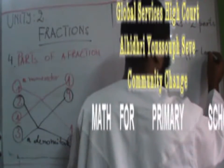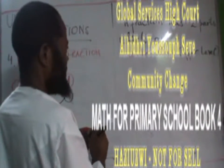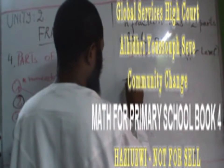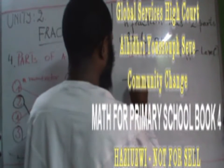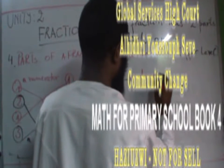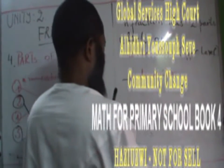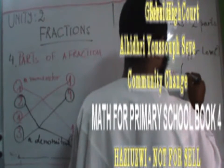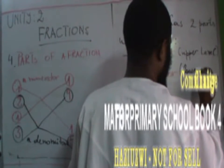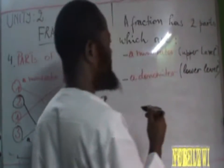The top level of a fraction is called the numerator, and the denominator is the lower level of a fraction.